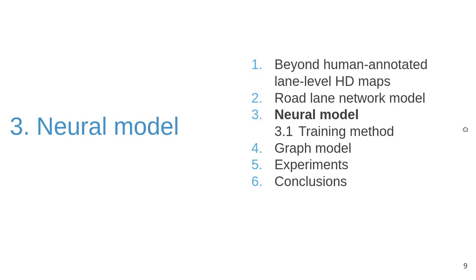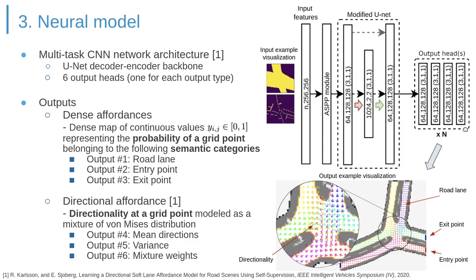Briefly on the neural model implementation: the current model consists of an encoder-decoder network with task-specific output heads, explained in our previous work presented at IV-2020. The first type of output is called dense affordance, representing the probabilistic belief that a grid-mapped point belongs to a road lane, as well as being an entry or exit point. The second type is directional affordance, represented by three sets of von Mises distribution parameters. Together, these three outputs form a mixture of von Mises distribution representing the directionality for every grid-mapped point.